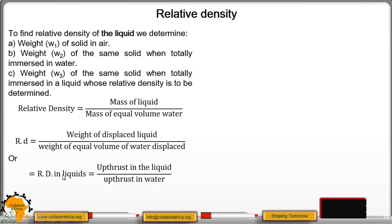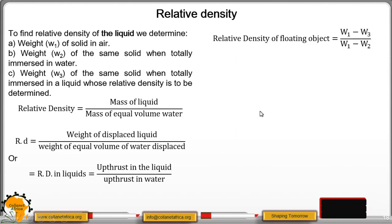Equivalently, relative density of a liquid equals upthrust in liquid divided by upthrust in water, since the weight of displaced liquid is the upthrust in liquid and the weight of equal volume of displaced water is the upthrust in water. So: relative density of liquid equals (W1 minus W3) divided by (W1 minus W2), where W1 minus W3 is upthrust in liquid and W1 minus W2 is upthrust in water.